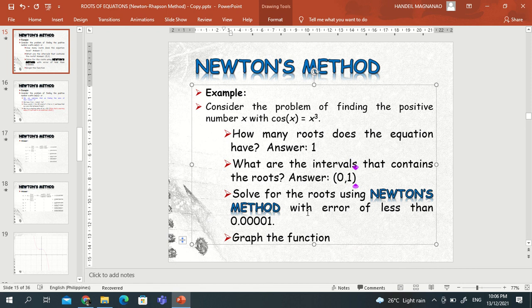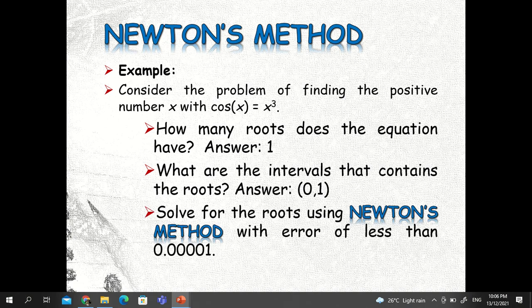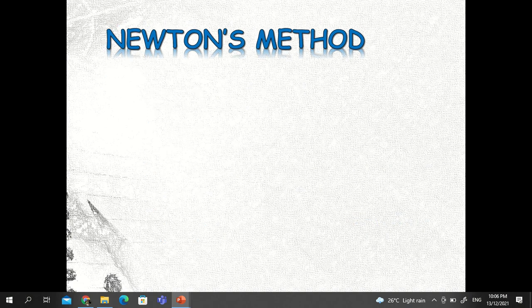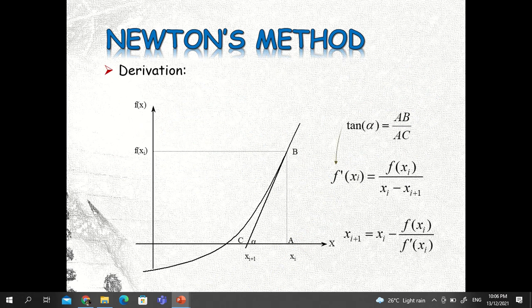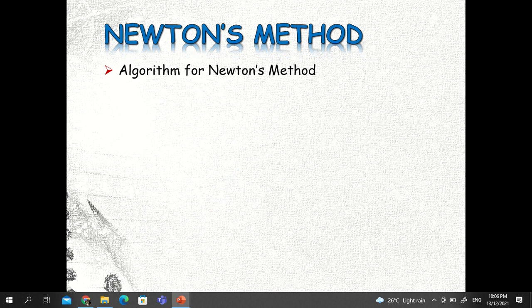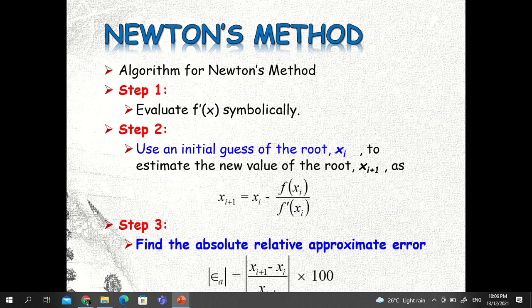Now to determine if the error is less than this, what you are going to do is just use the formula for the absolute error. This one, so you calculate this one. Okay, you have x sub i plus one minus x sub i divided by x sub i plus one. I think this is x sub i.